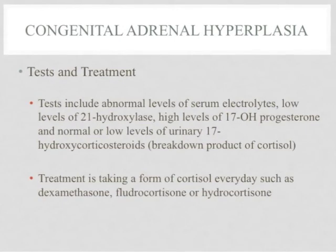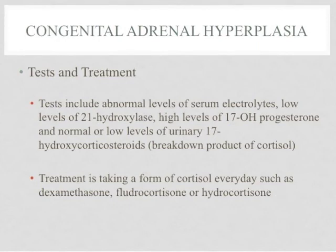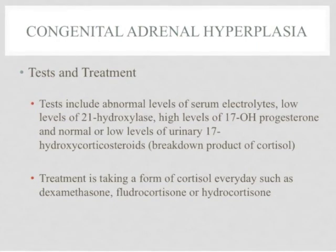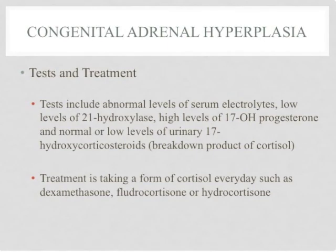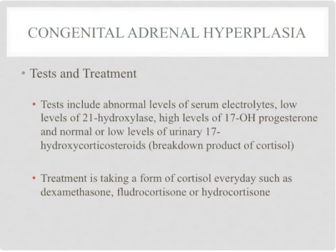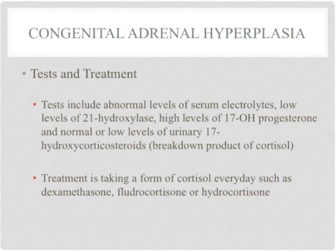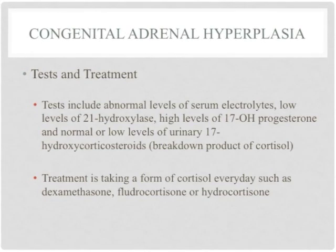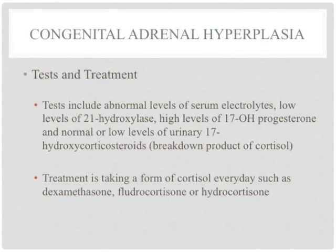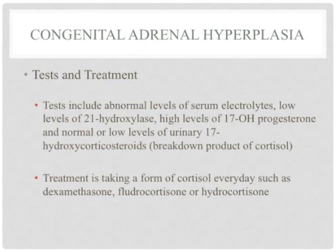The goal of treatment is to return hormone levels to the normal range. This involves taking a form of cortisol every day, such as dexamethasone, fludrocortisone, or hydrocortisone. In times of stress, severe illness, or surgery, the dose may need to be increased. These medications cannot be stopped suddenly because of the risk for adrenal insufficiency. To avoid this, patients must be gradually tapered off the medications. Babies with ambiguous genitalia will have their gender determined by karyotyping. Girls with genitalia appearing male will have corrective surgery within the first three months of their life.